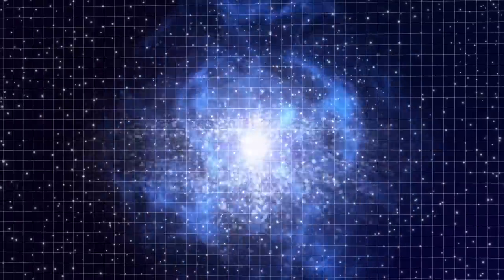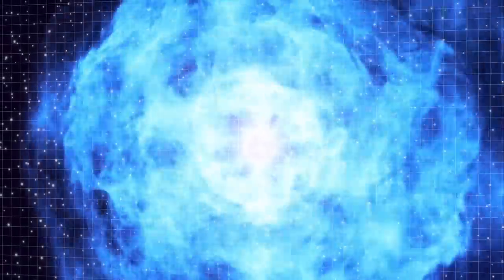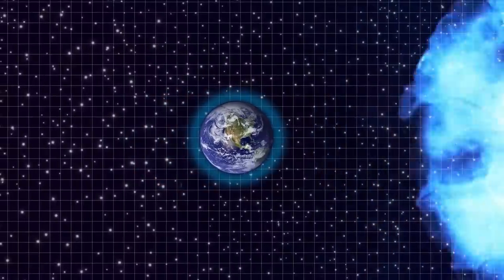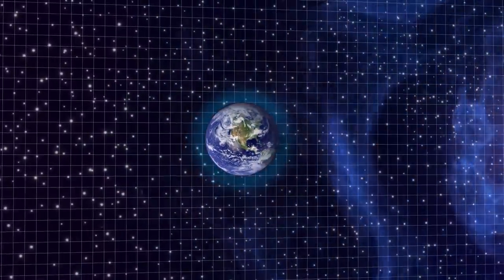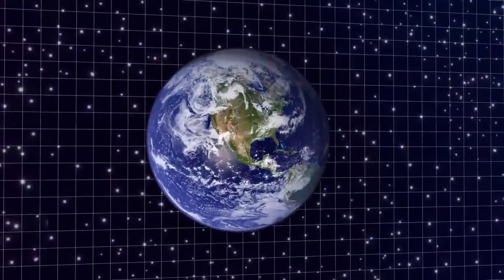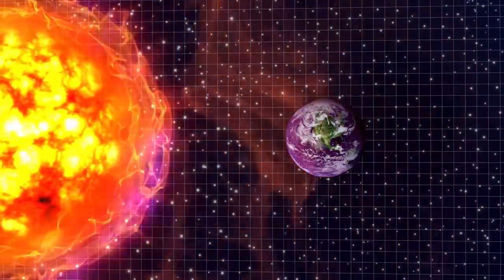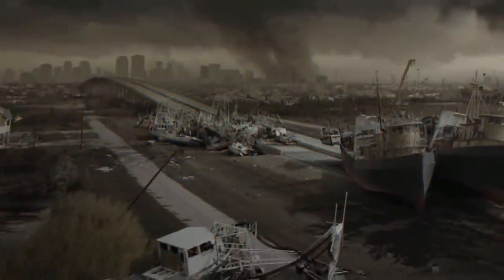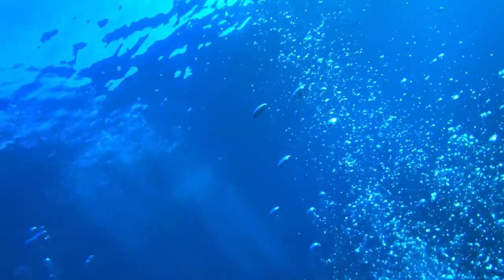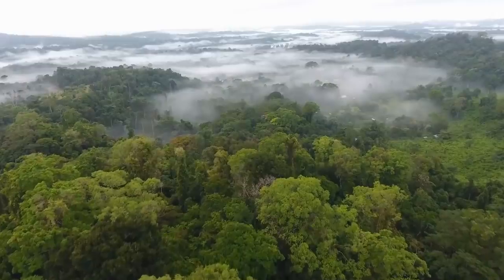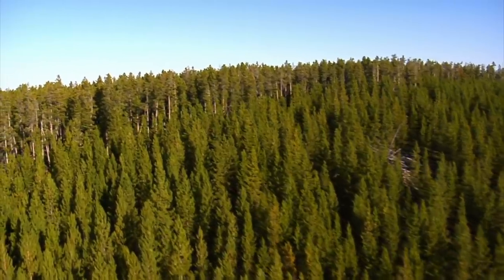The supernova explosion would unleash massive levels of X-rays and gamma rays that would bombard the planet and melt away the ozone layer. Once the ozone layer is gone, Earth would be exposed to dangerous levels of solar and ultraviolet radiation. The result would cause a mass extinction, including the destruction of phytoplankton that generate around half the Earth's oxygen, as much per year as all land plants combined.